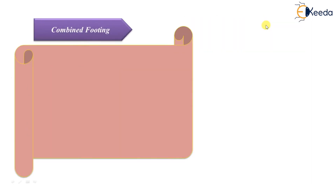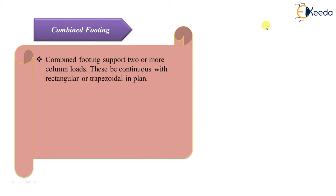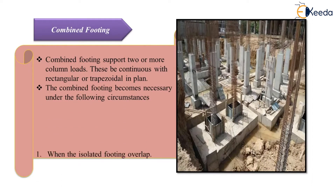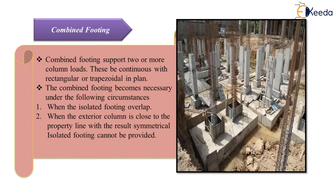The second type is combined footing. Combined footing supports two or more column loads. It becomes necessary under two conditions: first, when isolated footings overlap each other; and second, when the exterior column is close to the property line such that a symmetrical isolated footing cannot be provided. In those cases, we provide a combined footing.